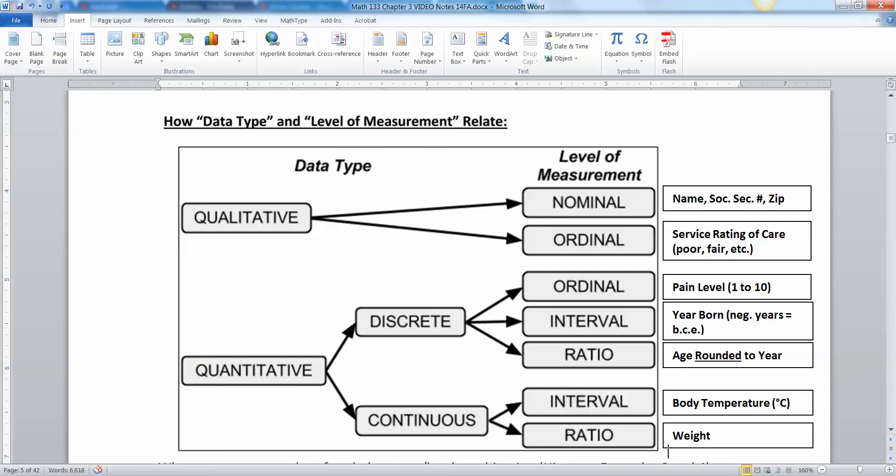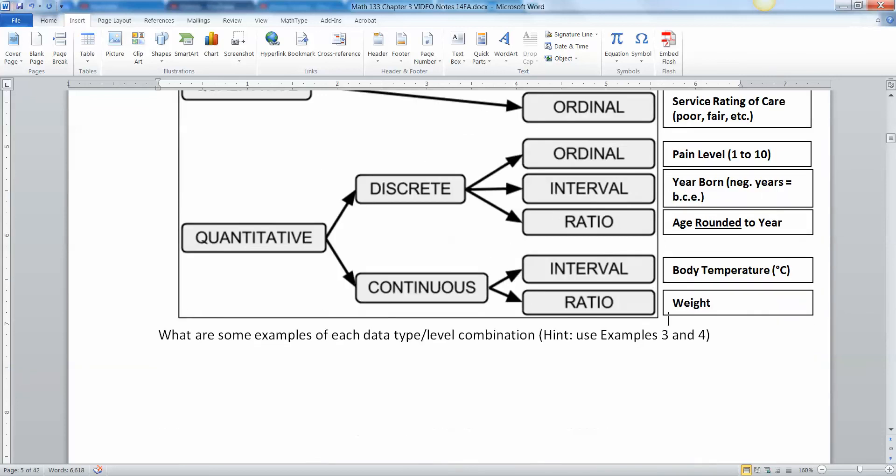Now continuous, lots of things are continuous: body temperature, blood pressure, weight. But not all of them are interval. Interval are the ones that can be negative. For example, your body temperature—well, technically your body temperature can't go negative, but temperature in general can go negative. That's what negative two degrees, negative three degrees, we hit it every winter in Michigan. Your weight on the other hand can't be negative, so weight is ratio.